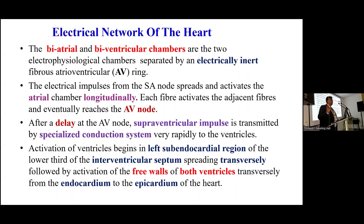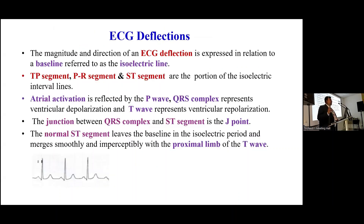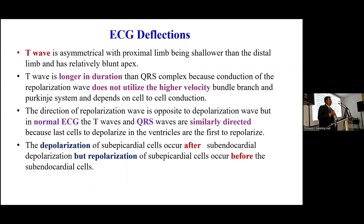In the introduction, the bi-atrial and bi-ventricular chambers: the atrium is activated longitudinally and the ventricular chamber is activated transversely. The TP segment, PR segment, and ST segment are the isoelectric portions. The P wave is atrial depolarization, QRS is ventricular depolarization, and the T wave is ventricular repolarization. The direction of the repolarization wave is opposite to the depolarization wave, but in normal ECG, the T wave and QRS are similarly directed because the last cells to depolarize in the ventricles are the first to repolarize.